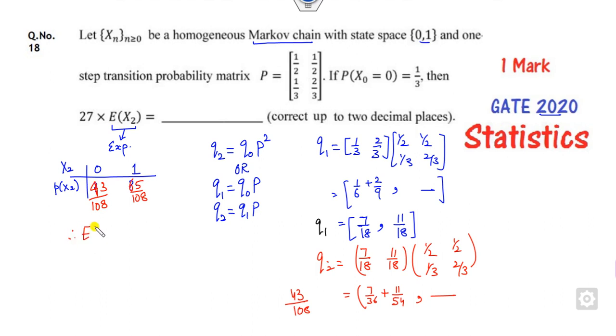Therefore, what is the expected value of X2? That will be 0, 65 upon 108. Now, what do you want? You want to multiply with that 27 also.